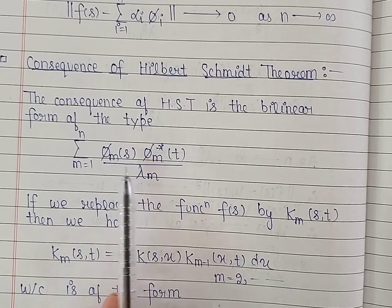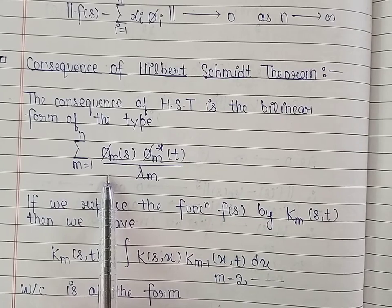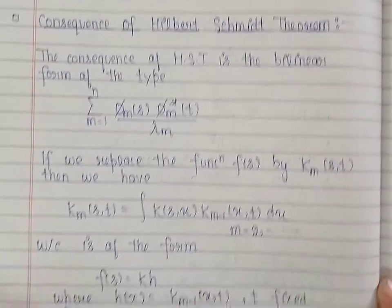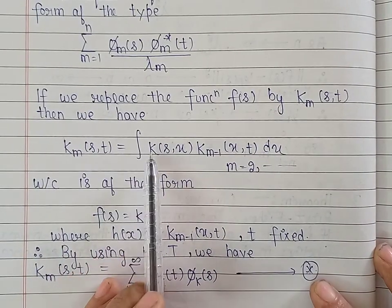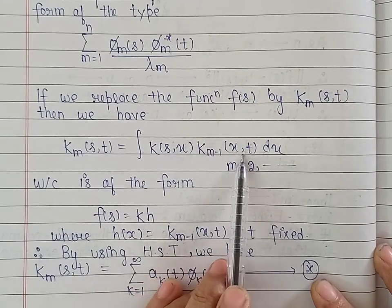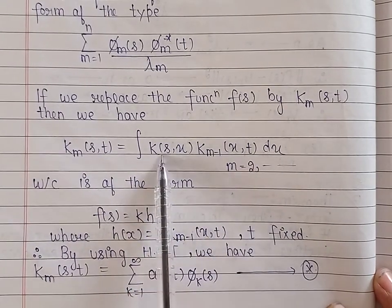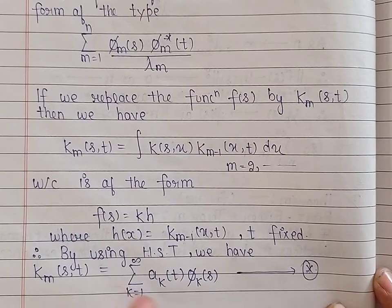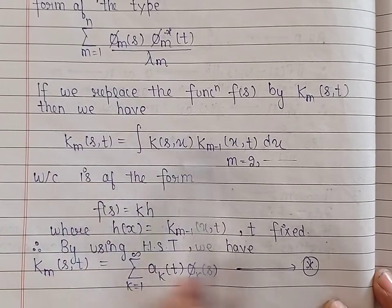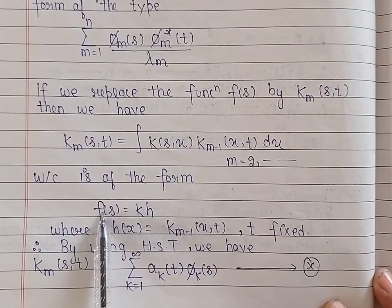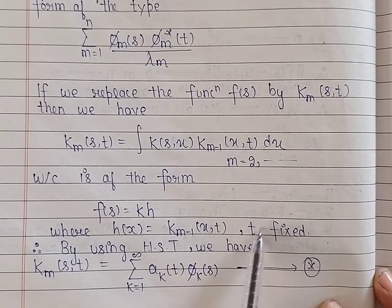Today, as a consequence of the theorem, we will find such a form for the m-th iterative kernel. By definition, the m-th iterative kernel K_m is given by the integral of K(s,x) times K_{m-1}(x,t) dx. This can be written in the form of the equation discussed in the Hilbert-Schmidt theorem as f = Kh, where the function h is given by K_{m-1}(x,t), with t fixed.